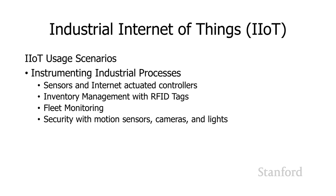Another area where the internet can be used is in industrial processes, sometimes referred to as the industrial internet of things. We can take a standard industrial process and instrument it by adding different things onto the internet — sensors, controllers that can be actuated via the network, and inventory management using RFID tags. If we've got a fleet of vehicles, we can connect them all to the internet and keep track of them. Personally, I'm fond of delivery vehicles on the internet so we can see where they're coming, mostly because delivery often has trouble finding my apartment. We can also add security like motion sensors, cameras, and lights onto the internet.